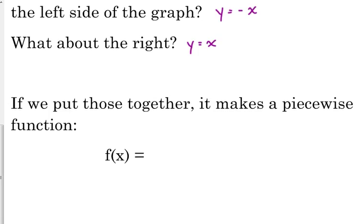So, if we put them together, here's what I want you to put beside that f of x. You've got to put, we call it a brace. It looks like a squiggly parentheses. But the left side was negative x, comma, we're going to say x is less than 0. That's the left side.